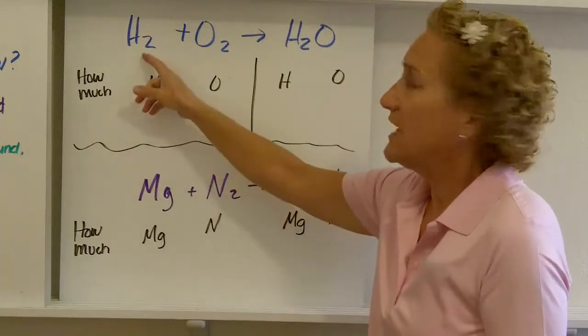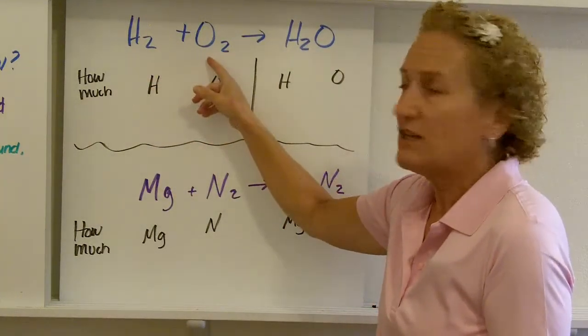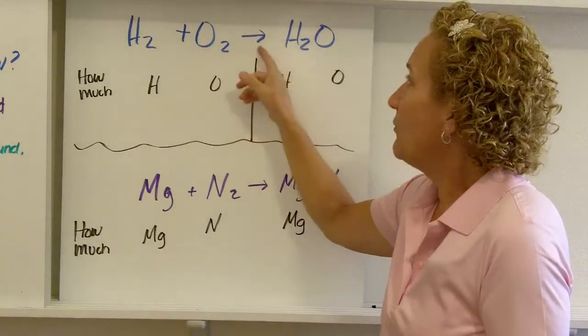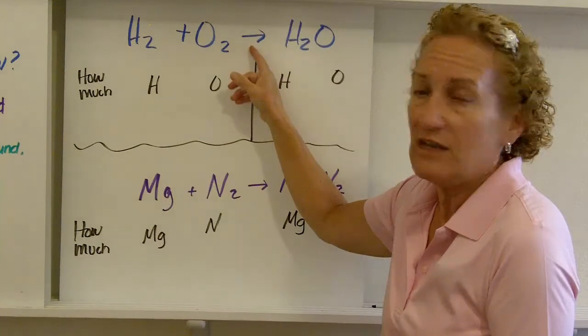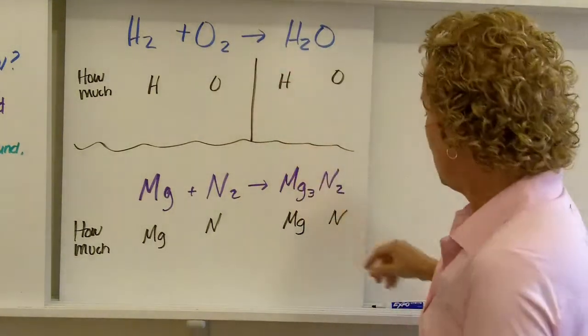We're going to do water. We take hydrogen gas, which is H2, and oxygen gas, which is O2, and that reacts to form. That's what the little arrow is. You say reacts to form or reacts to yield, reacts to form water, H2O.